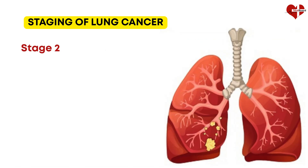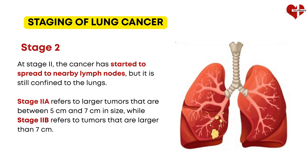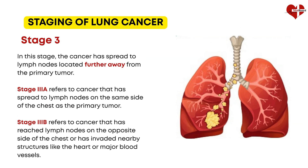At Stage 2, the cancer has started to spread to nearby lymph nodes but is still confined to the lungs. Stage IIA refers to larger tumors between 5 cm and 7 cm in size, while Stage IIB refers to tumors larger than 7 cm. In Stage 3, the cancer has spread to lymph nodes located further away from the primary tumor. Stage 3A refers to cancer that has spread to lymph nodes on the same side of the chest, while Stage 3B refers to cancer that has reached lymph nodes on the opposite side of the chest or has invaded nearby structures like the heart or major blood vessels.